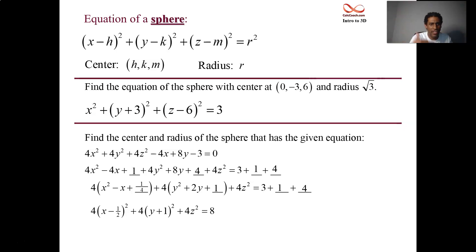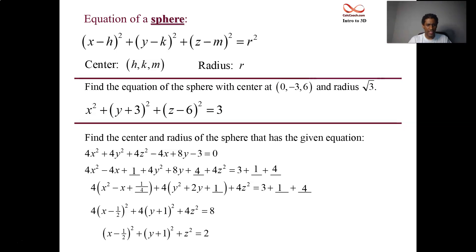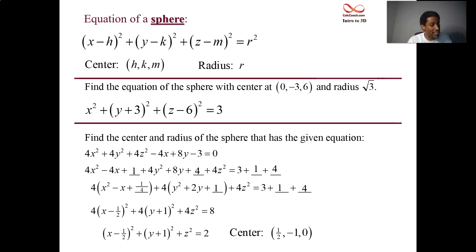This doesn't look like the standard equation yet — there's still a constant multiplier of 4 in front of the perfect squares. So divide everything by 4. All the leading coefficients on the left go away. Don't forget to divide 8 by 4 to get 2. Now: what's the center? x minus one-half, so h is one-half; k is negative 1; and z gives 0. Center is (1/2, −1, 0). The radius is the square root of 2.